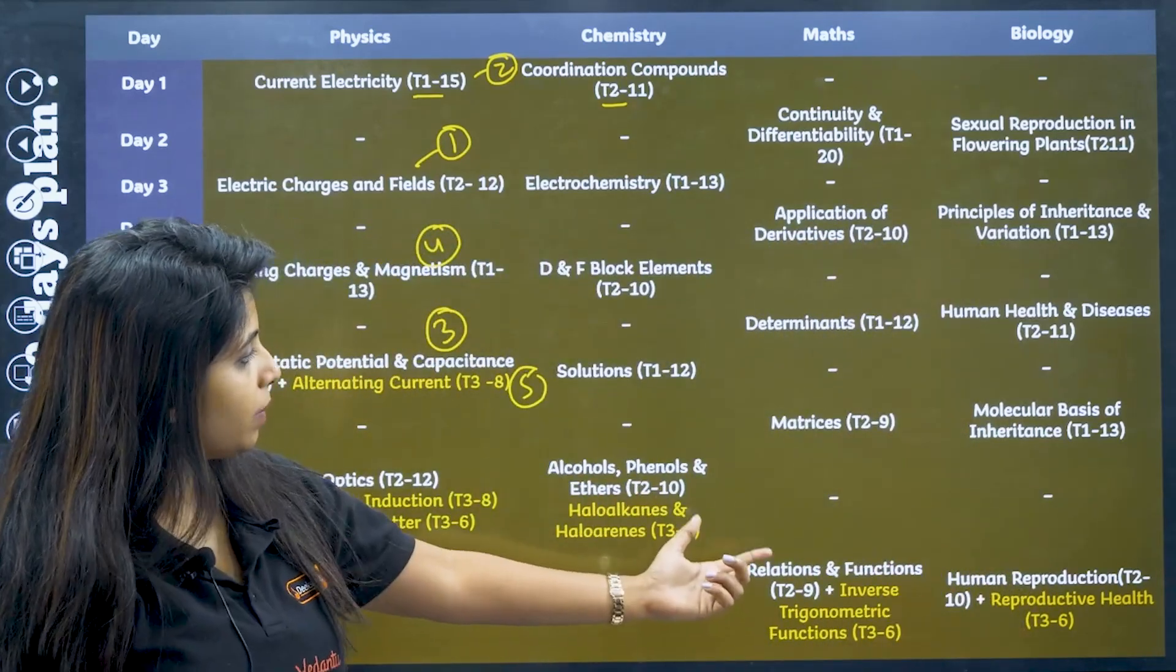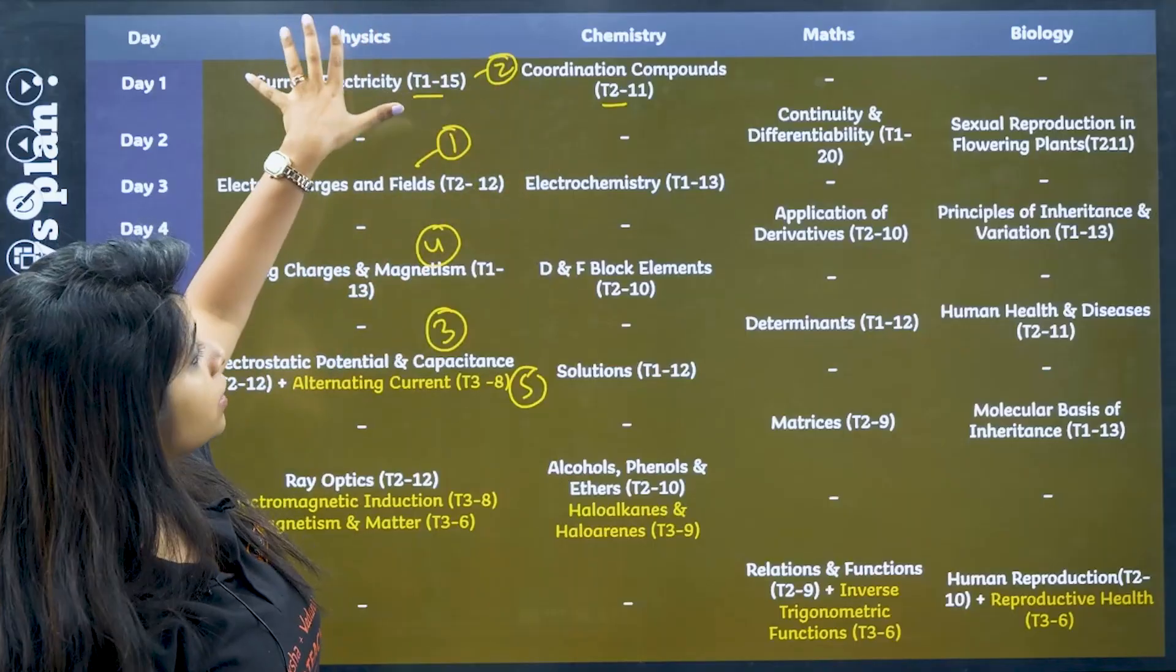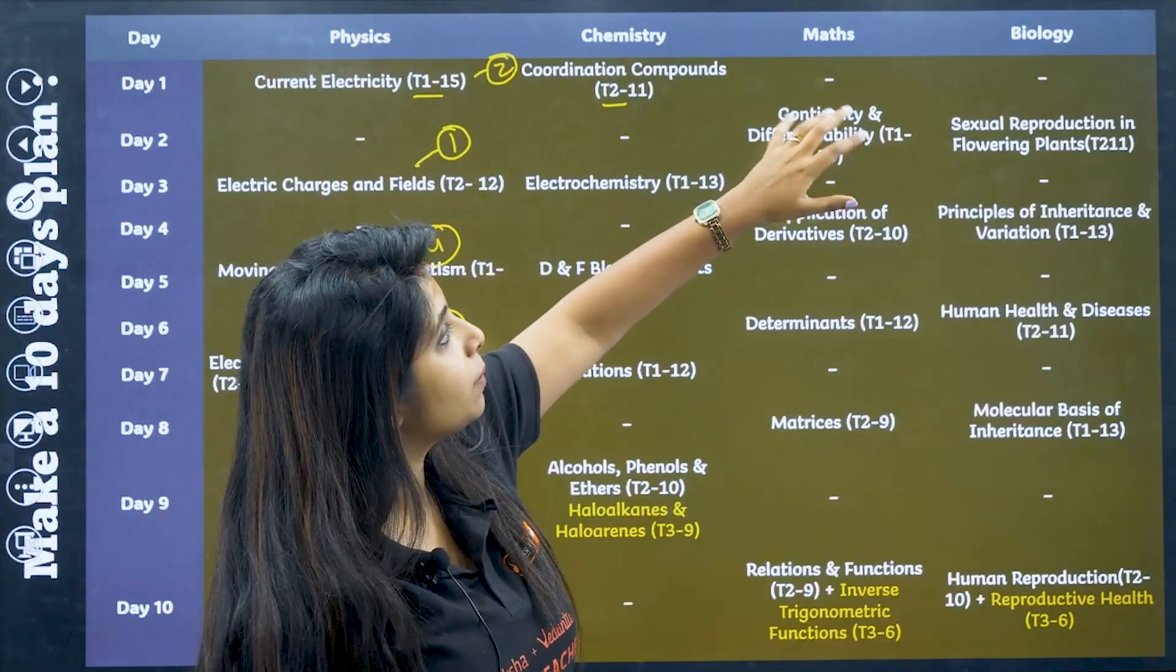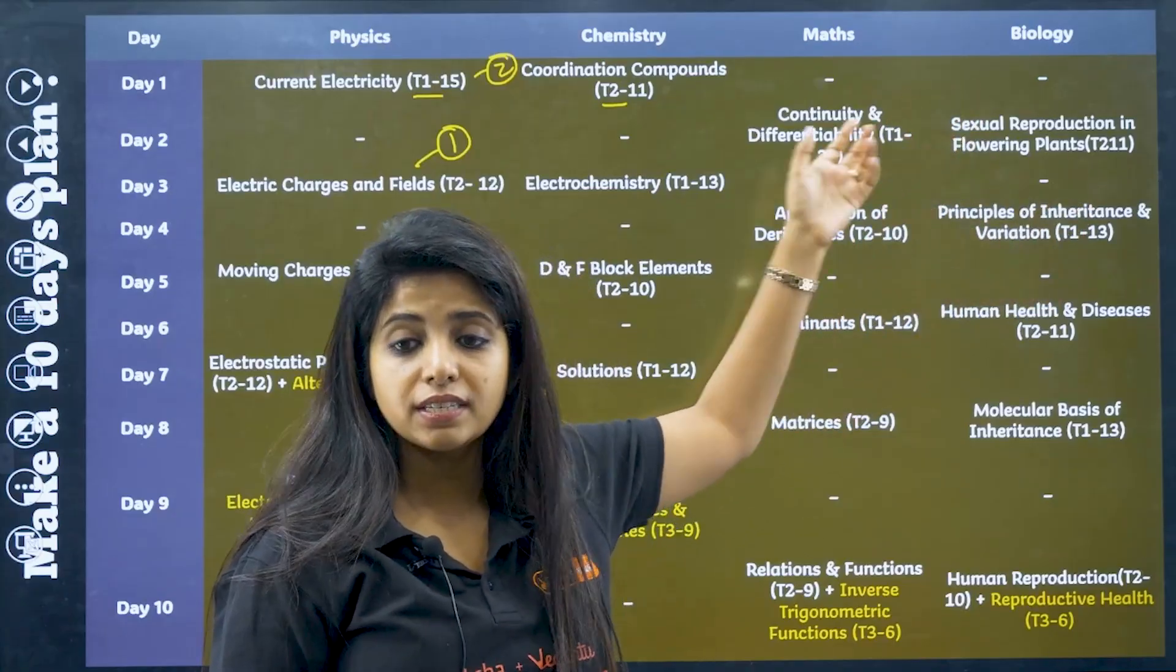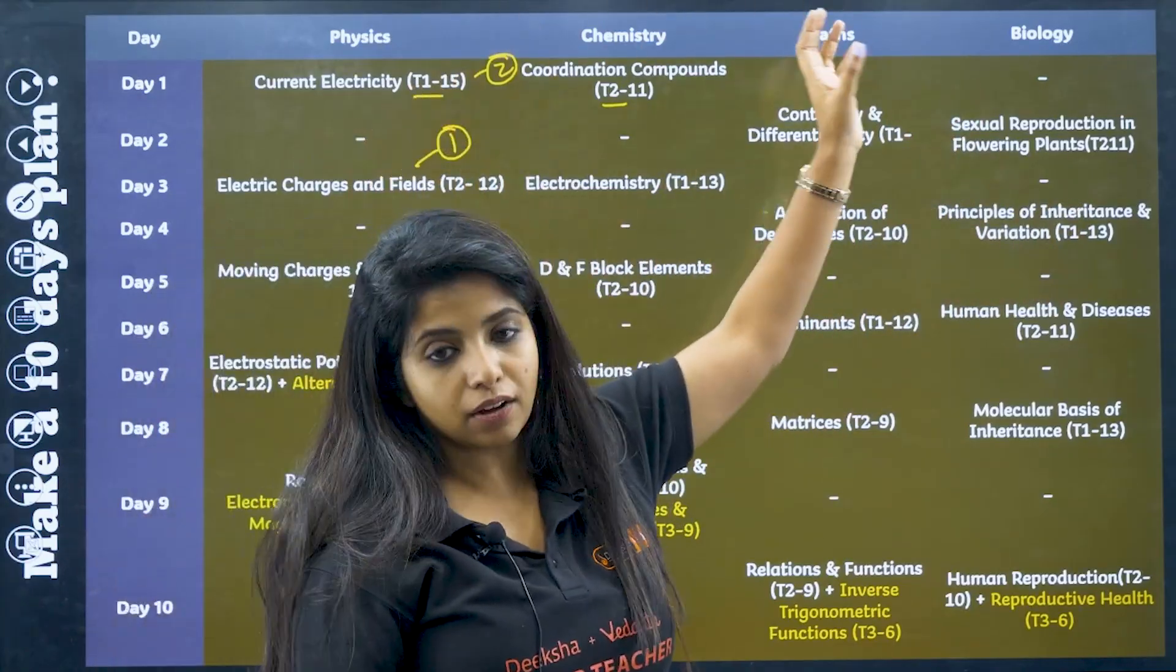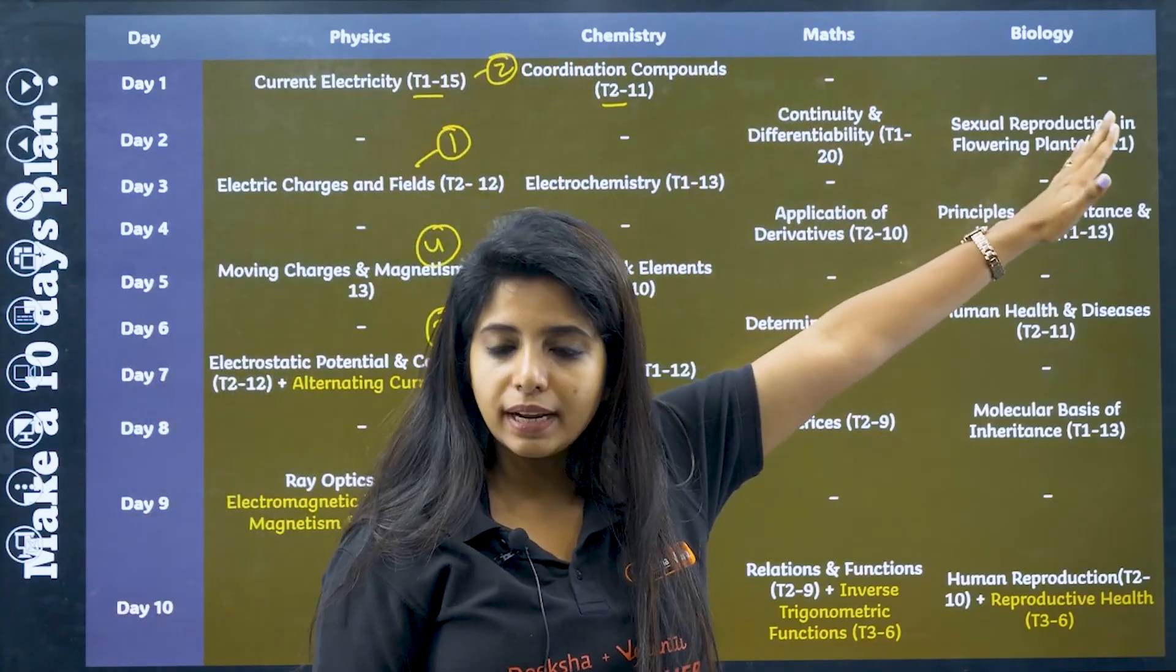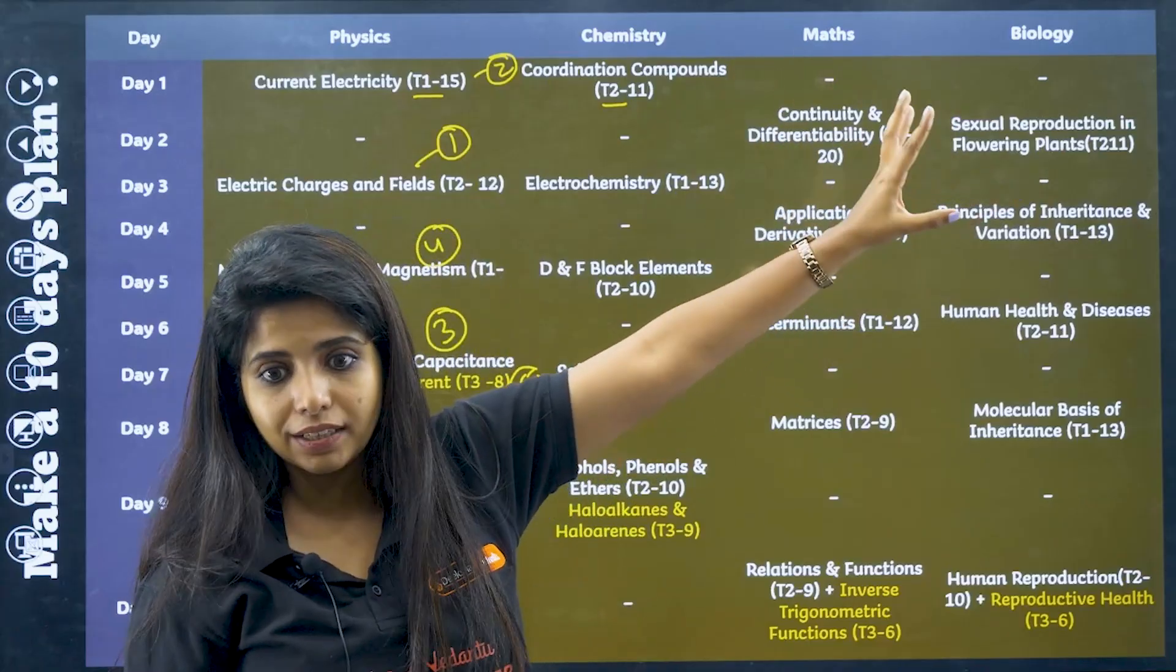Now when I say 10 days, over here, alternating it is going. So one day you are studying physics and chemistry. The second day you are completing maths and biology. If at all you do not have biology, you can give the complete day for mathematics. And if you want to take some more thing out from physics and chemistry, you can utilize that over here if at all you need it.